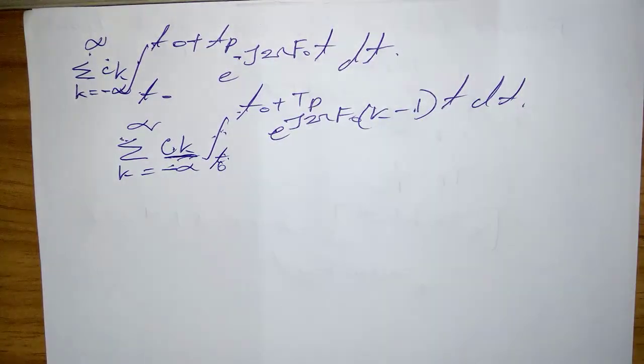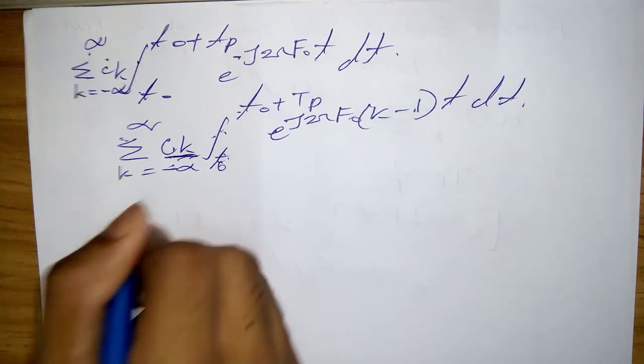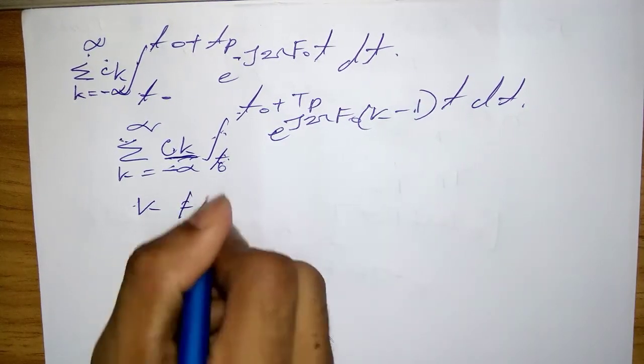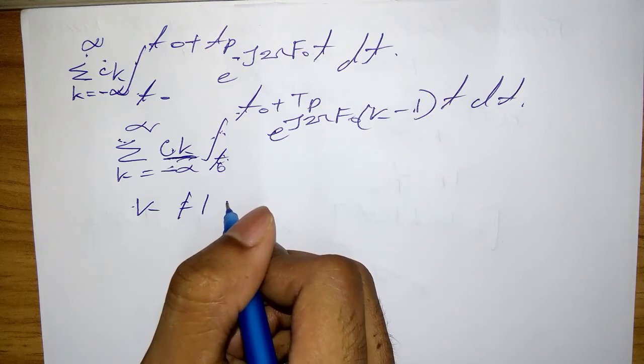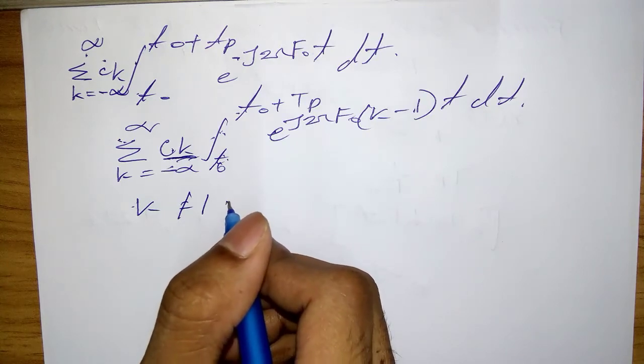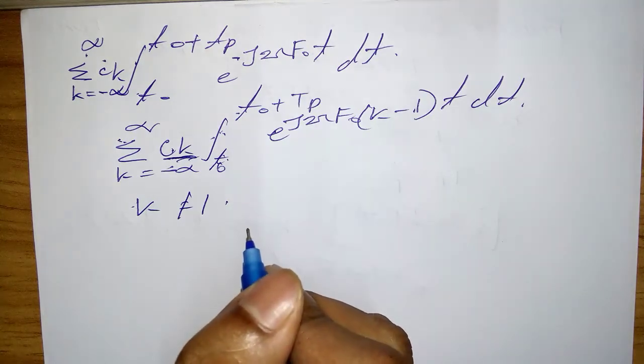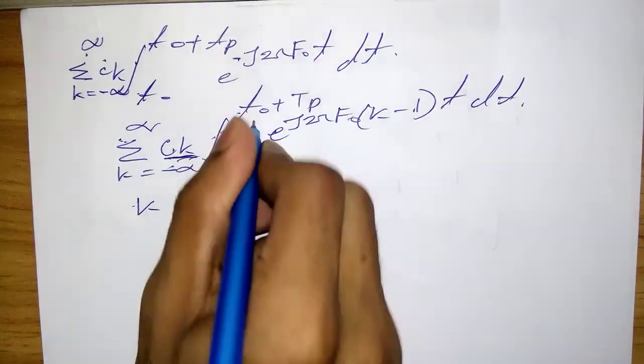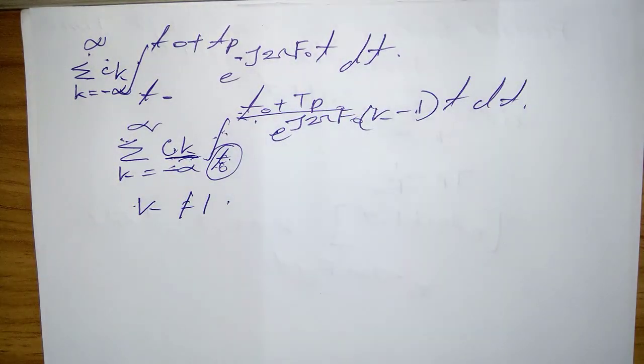In the case where k ≠ l, the right-hand side evaluated at the lower and upper limits t₀ and t₀+T_p respectively yields 0.